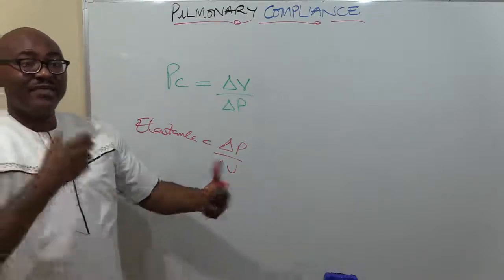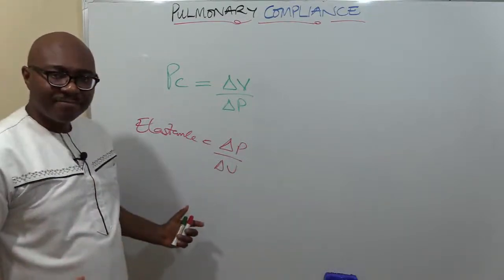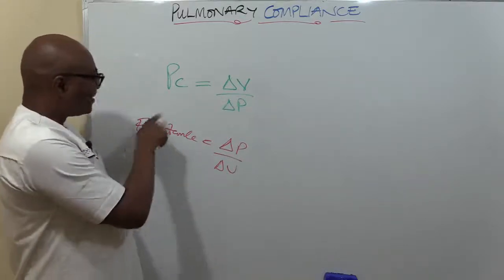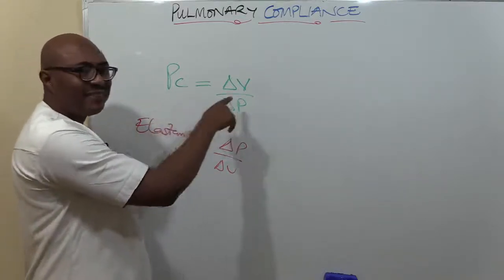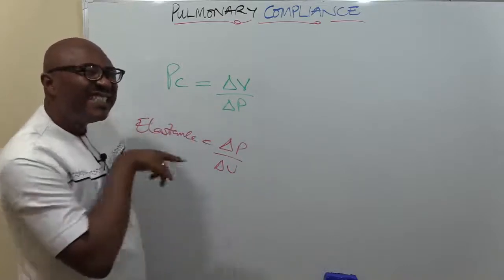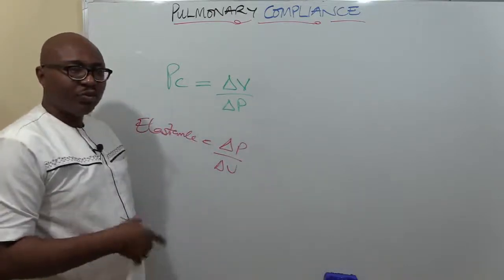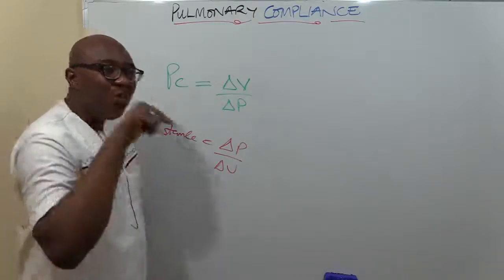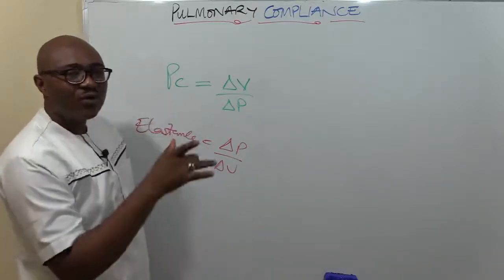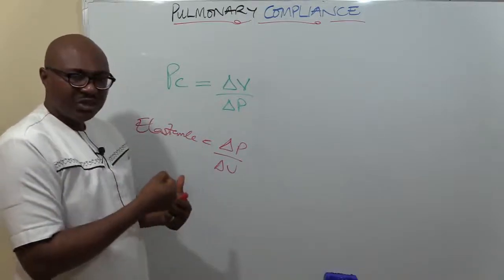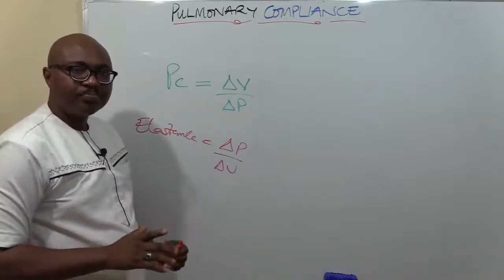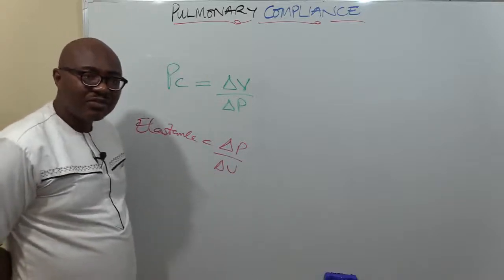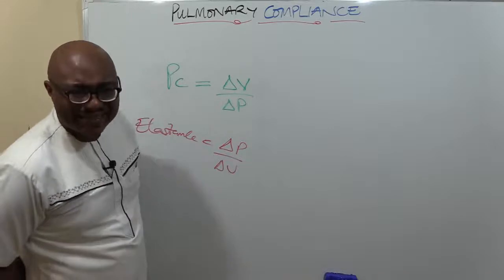It's the degree of distensibility or stretchability. While compliance is a measure of stretchability, elastance is a measure of rigidity. If the lung is not very compliant, low compliance equals rigidity - it's stiff, doesn't stretch much. So the next logical question you ask yourself is: what are the things that determine pulmonary compliance?